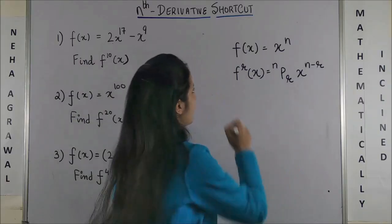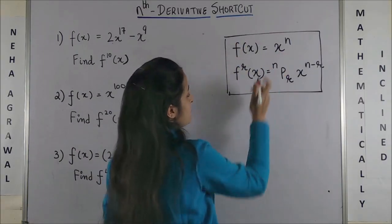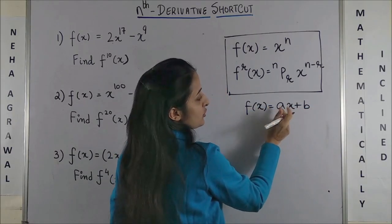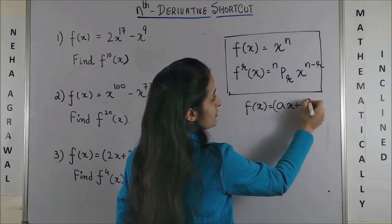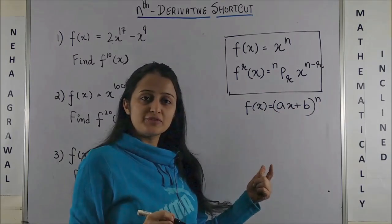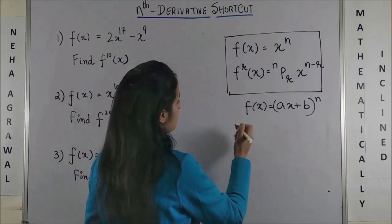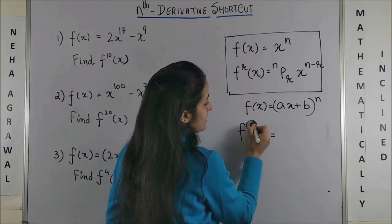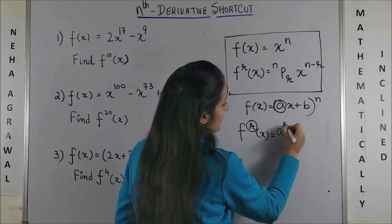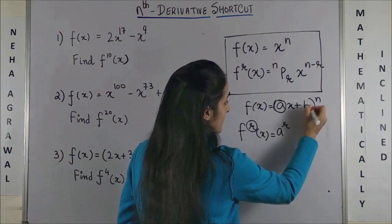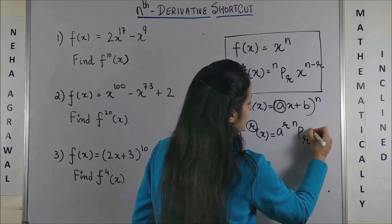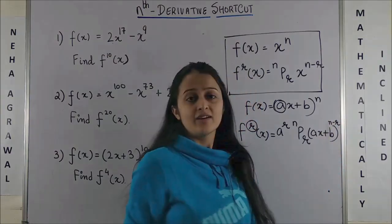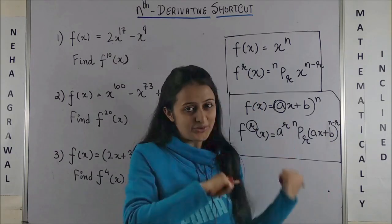Same way, in case of a simple linear function where you have the coefficient to be a and another constant to be b, and you have to find the rth derivative for this specific number - well, not to worry. Again it is the same. If this is r, this also would become r. And after that you would write your nPr, and then (ax + b) whole raised to power n minus r. Wasn't this so quick and easy? Note it down.